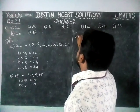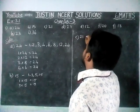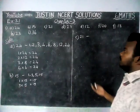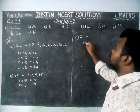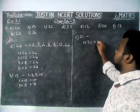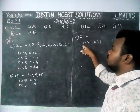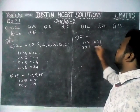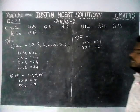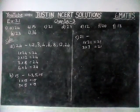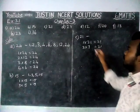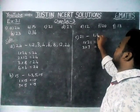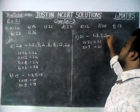Next, option C: factors of 21. We will write the table. 1 into 21 is equal to 21. 2 will not come, then 3 — 3 sevens are 21. Next, 7 only will come; we don't have any other number. So factors of 21 are: 1, 3, 7, 21.